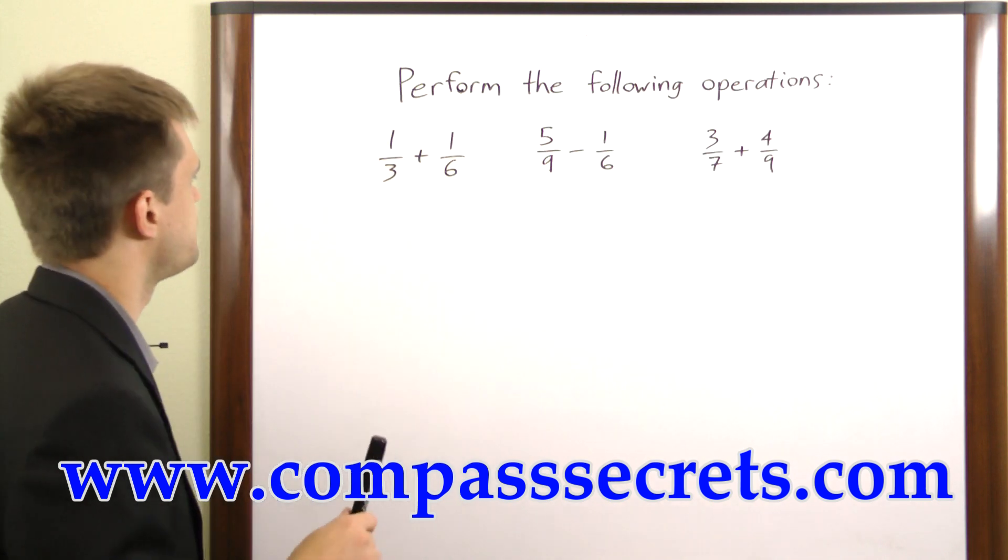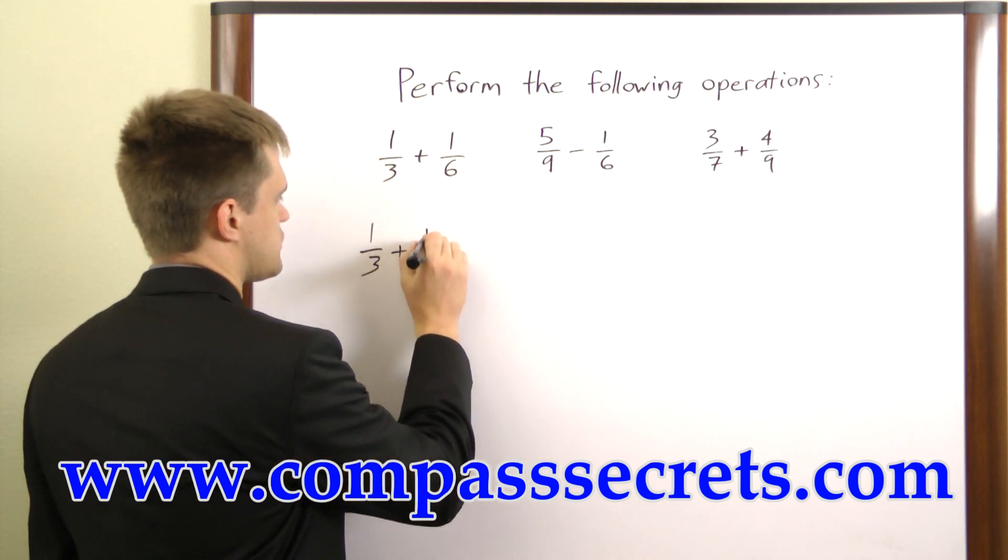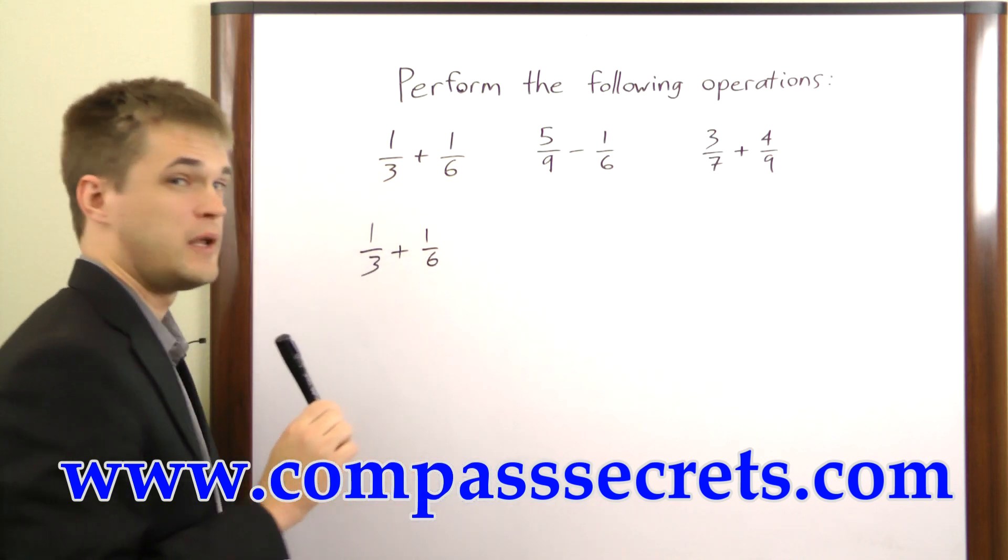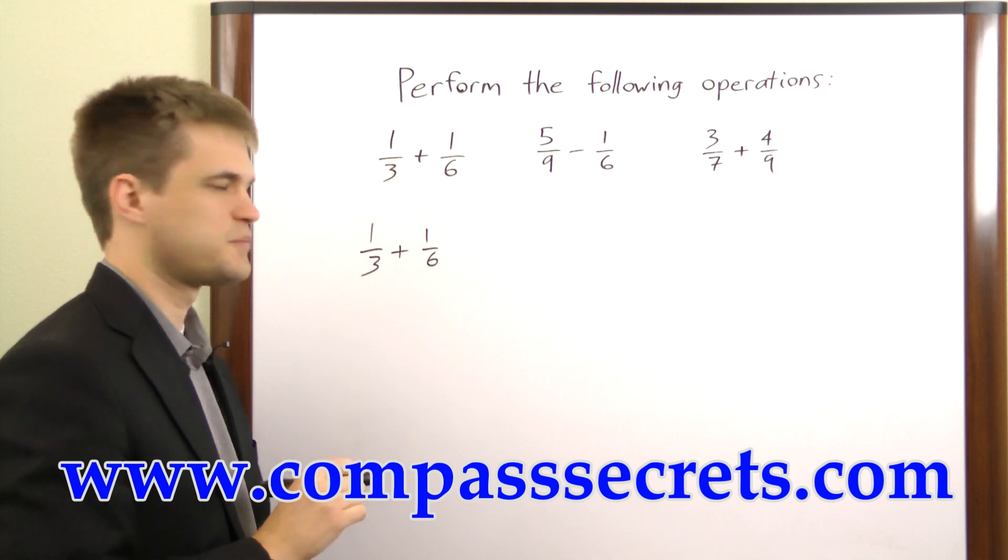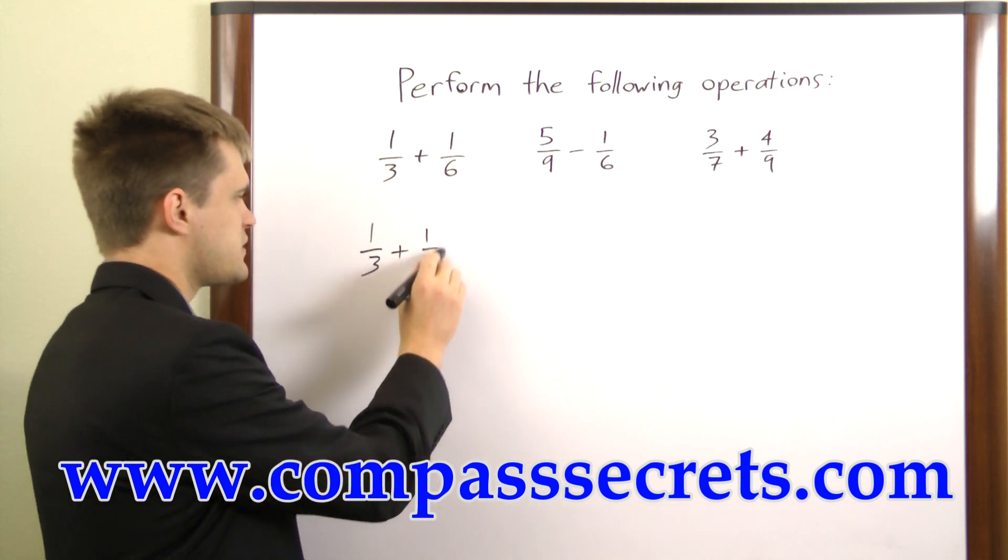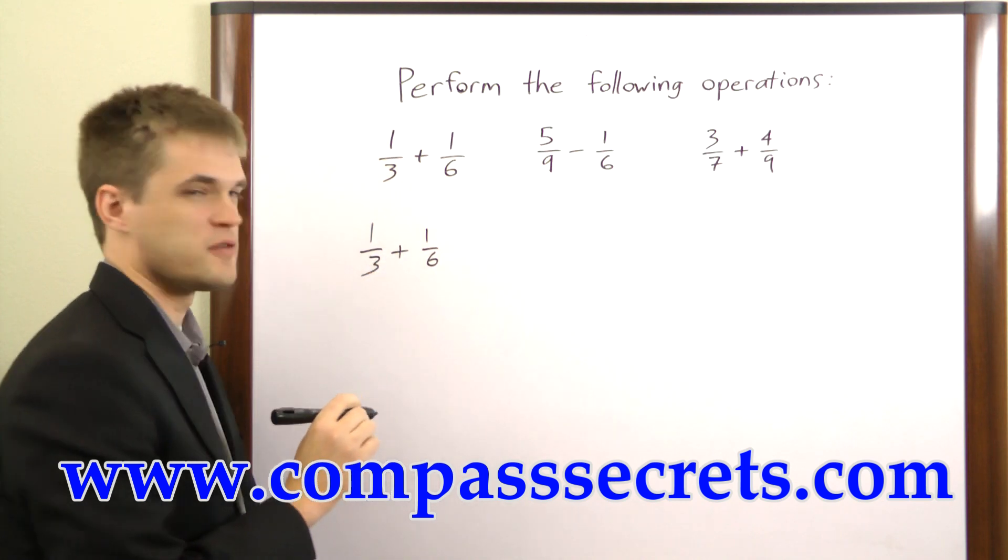Let's look at a few examples here. First, we have 1 over 3 plus 1 over 6. Now, the least common multiple between 3 and 6 is 6. This one already has a denominator of 6, so we just need to change this one to have a denominator of 6.